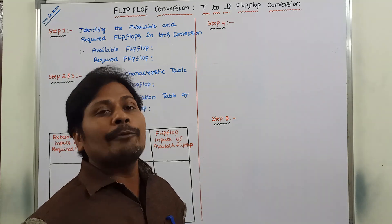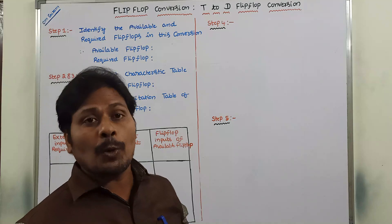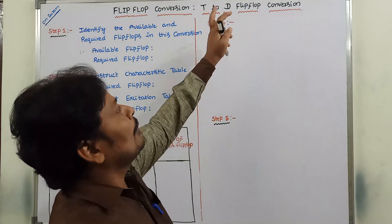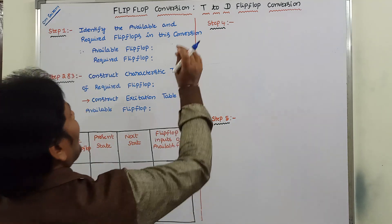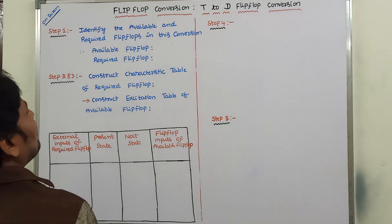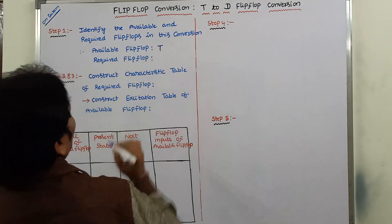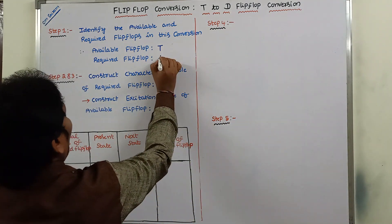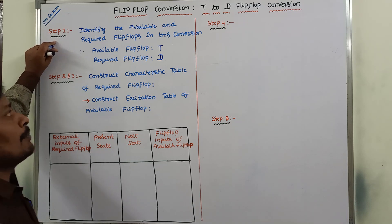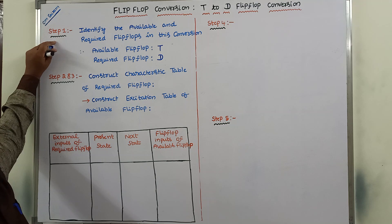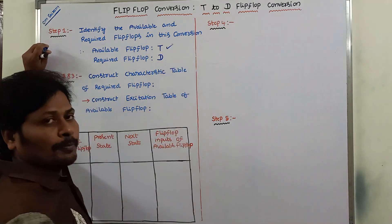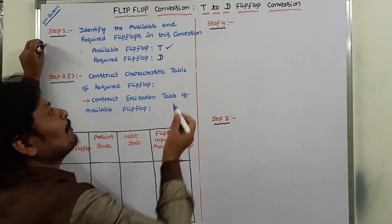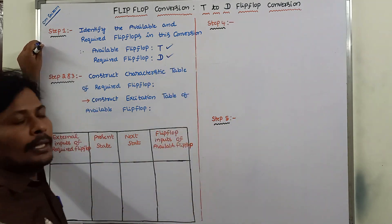In the first step, we have to identify which flip-flop is the source or available flip-flop, and which flip-flop is the required or desired flip-flop. Whatever flip-flop we are given, that is called the available flip-flop. Here, the available flip-flop is the T flip-flop and the required flip-flop is the D flip-flop.